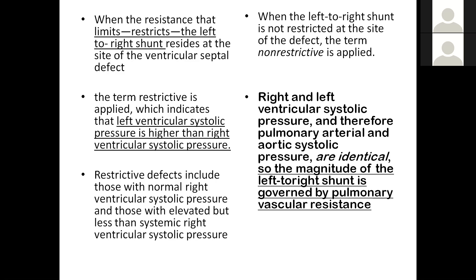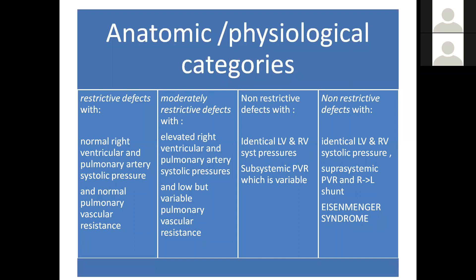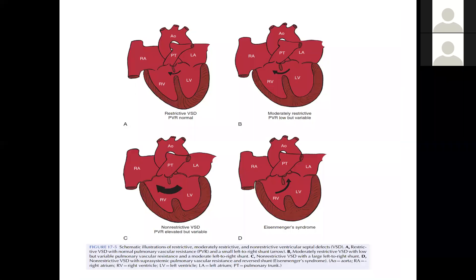When the left-to-right shunt is not restricted at the site of the defect, the term is non-restrictive. Here, RV and LV systolic pressures, and therefore pulmonary artery and aortic systolic pressures, are identical, and the magnitude of the left-to-right shunt is driven by pulmonary vascular resistance. There are broadly four anatomic/physiologic categories: restrictive defects with normal RV and pulmonary artery systolic pressure; moderately restrictive defects with elevated RV and pulmonary artery pressures and variable pulmonary vascular resistance; non-restrictive defects with identical LV and RV systolic pressure but subsystemic PVR; and non-restrictive defects with identical pressures but systemic PVR, which is Eisenmenger syndrome.